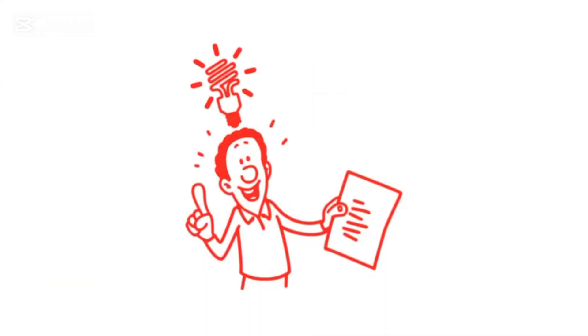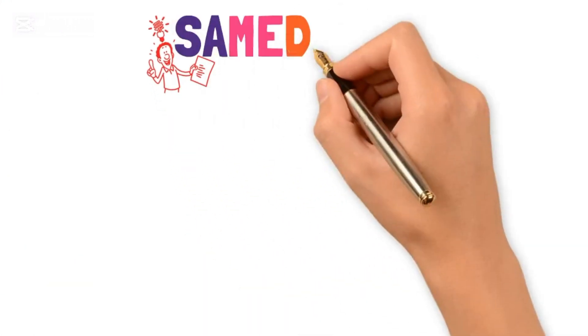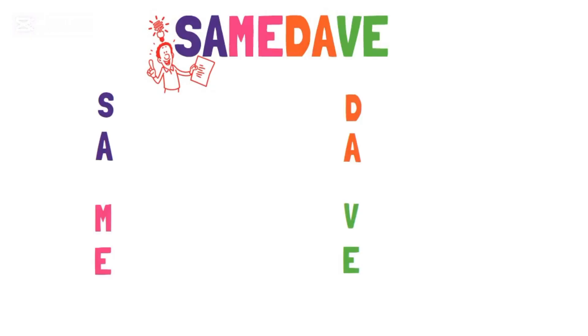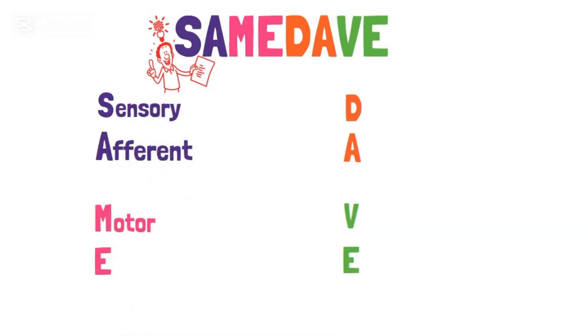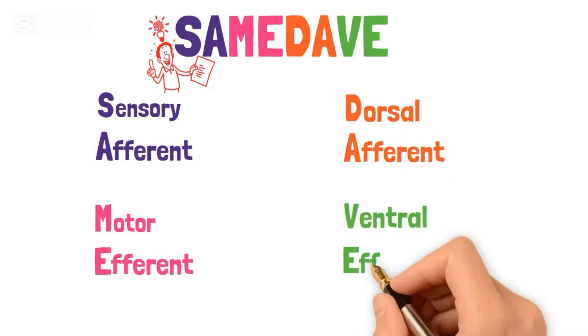Then remember the mnemonic SAME DAVE, which stands for Sensory, Afferent, Motor, Efferent, Dorsal, Afferent, Ventral, Efferent.